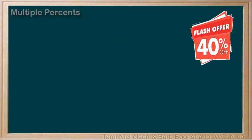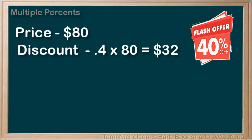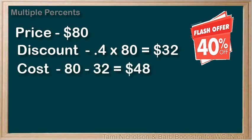A different type of calculation happens when you see some discounts at a store. You are shopping and you see a flash offer: 40% off. You are going to calculate the discount on an item with an original price of $80. The discount is .4 times 80, which equals $32, so the price you would be paying is $48.